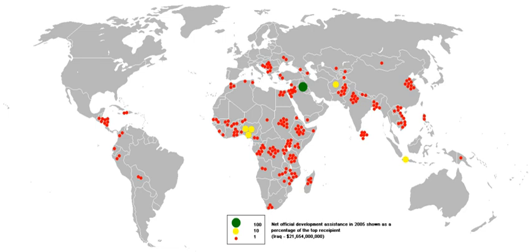The Development Assistance Committee of the Organization for Economic Co-operation and Development defines its aid measure, Official Development Assistance, as follows: ODA consists of flows to developing countries and multilateral institutions provided by official agencies, including state and local governments, or by their executive agencies, each transaction of which meets the following test: (a) it is administered with the promotion of the economic development and welfare of developing countries as its main objective, and (b) it is concessional in character and contains a grant element of at least 25% calculated at a rate of discount of 10%.